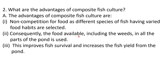As a result, the food available throughout the entire body of water is used, including weeds, which some fish consume. So the entire pond — top, middle, and bottom — is utilized efficiently. This improves fish survival because there is no competition, the mortality rate is less, and it increases the fish yield from the pond.